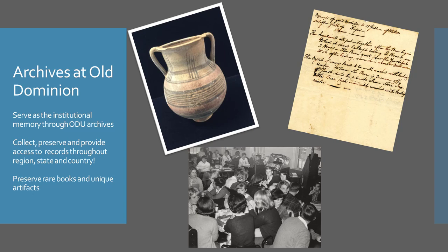The second collecting arm is the manuscripts area. This area documents the history of Norfolk, Hampton Roads, and Virginia, but also covers other areas of the United States. It includes personal papers and family papers, organizational records, as well as maps and blueprints. Some of the strengths of our collection include African American, women's, and maritime history, as well as armed conflicts such as World War II, the Civil War, and LGBTQ history. The third collecting arm is the rare books department, which collects rare and limited edition books from 1550 to the present. Strengths include the Tidewater area and Virginia history, as well as books that help support the collections we currently have.